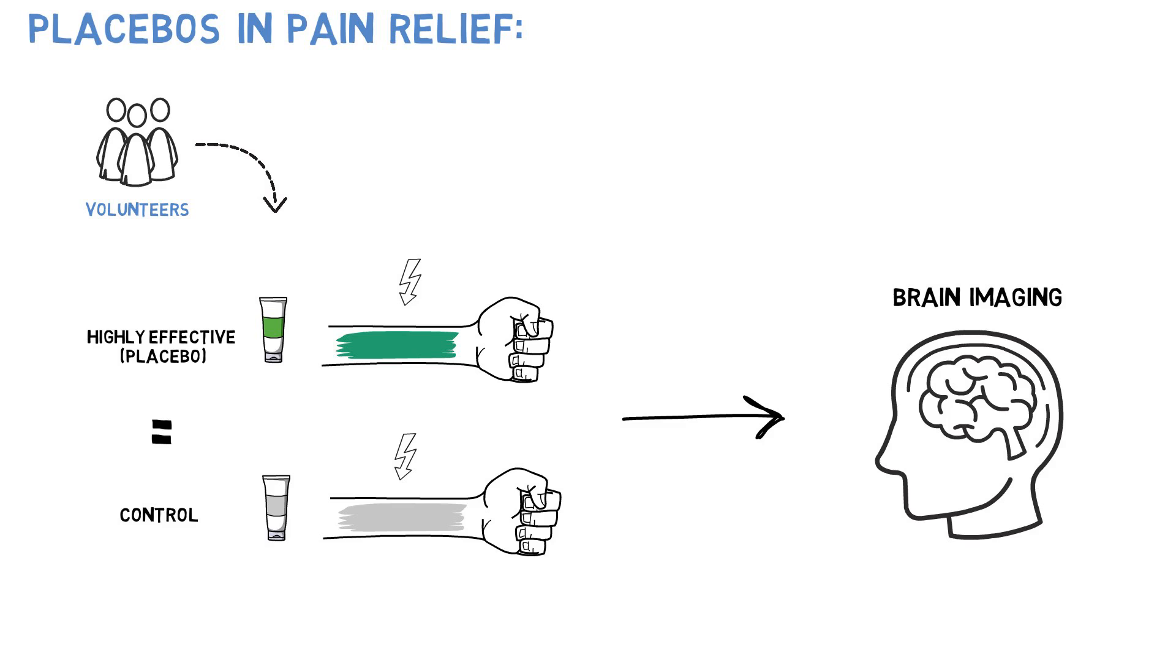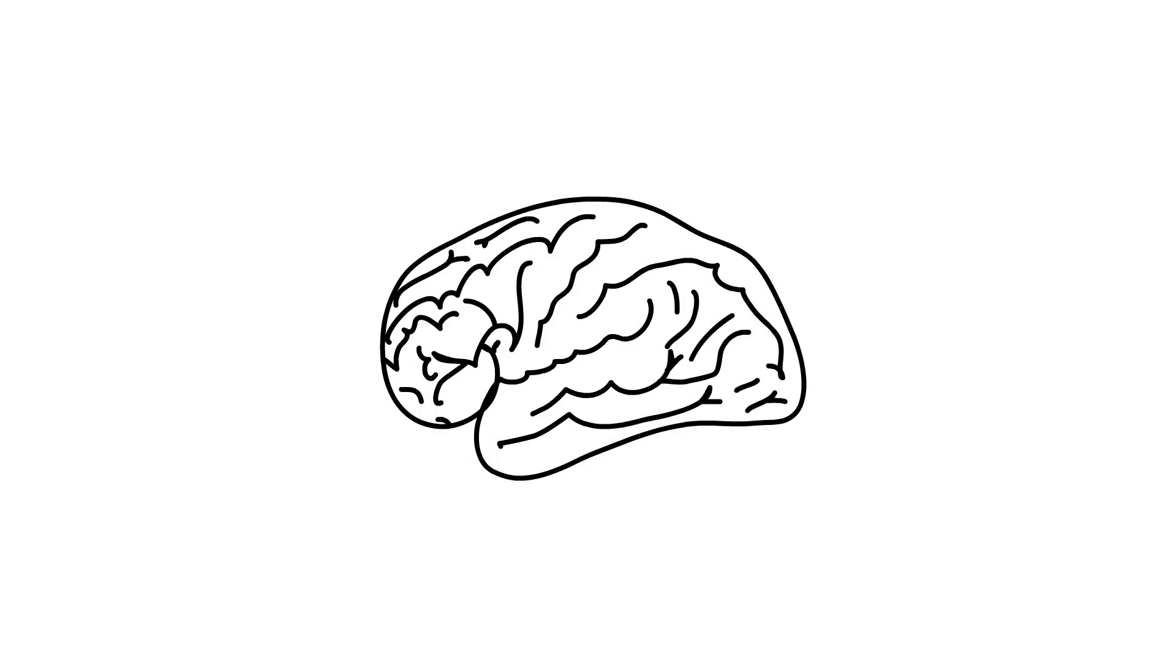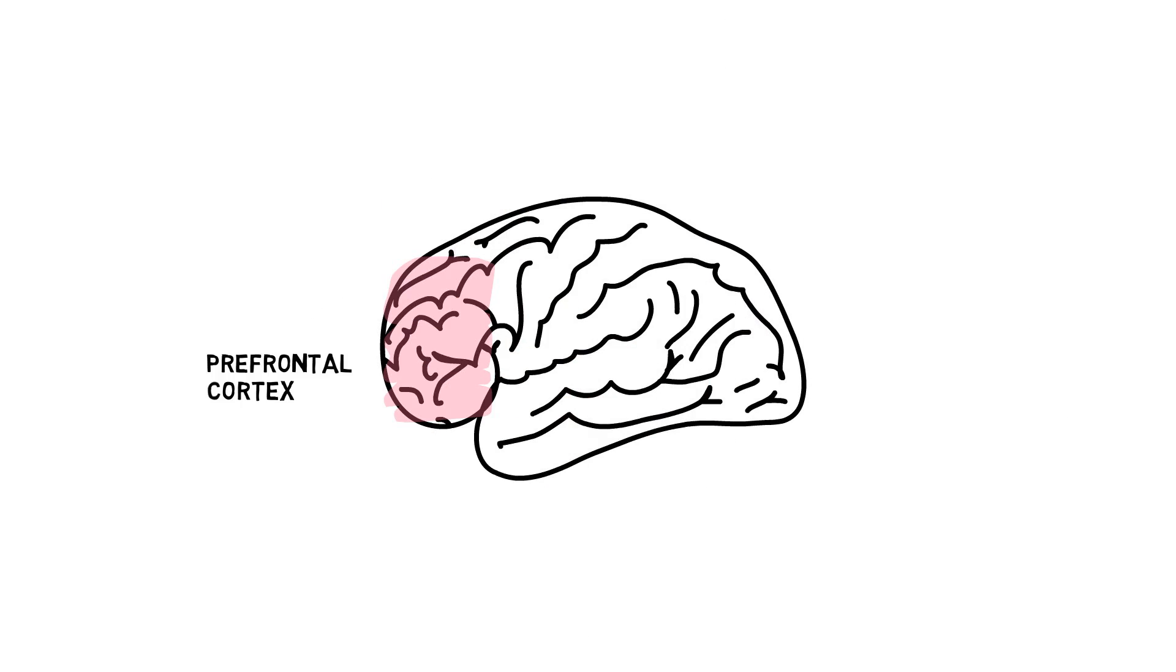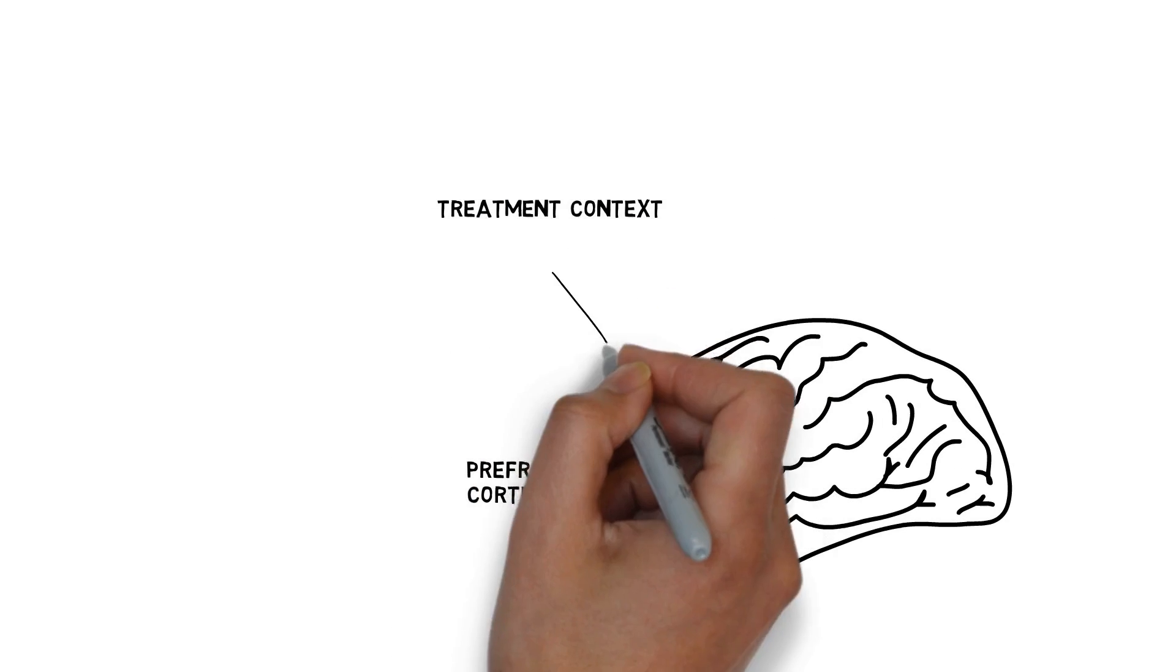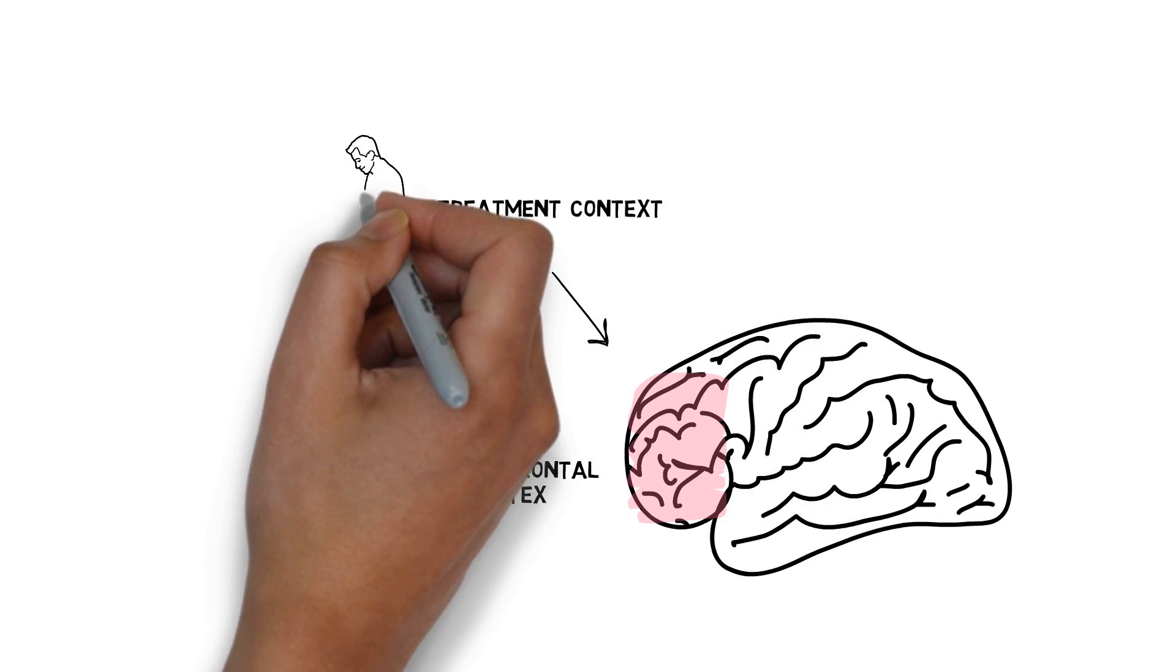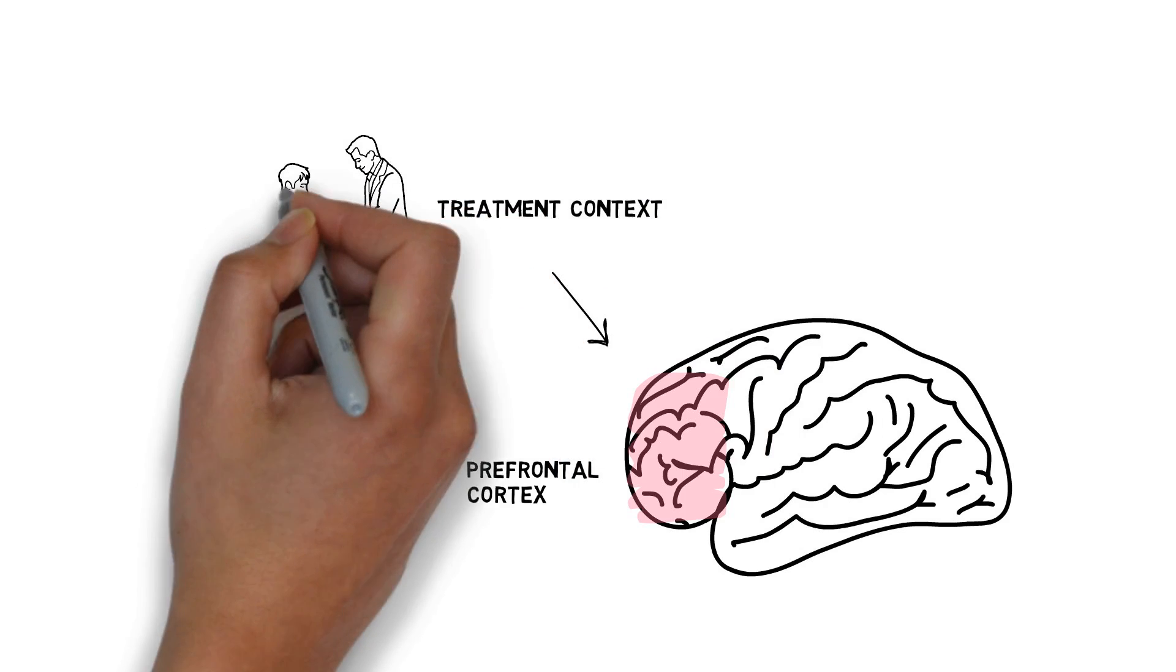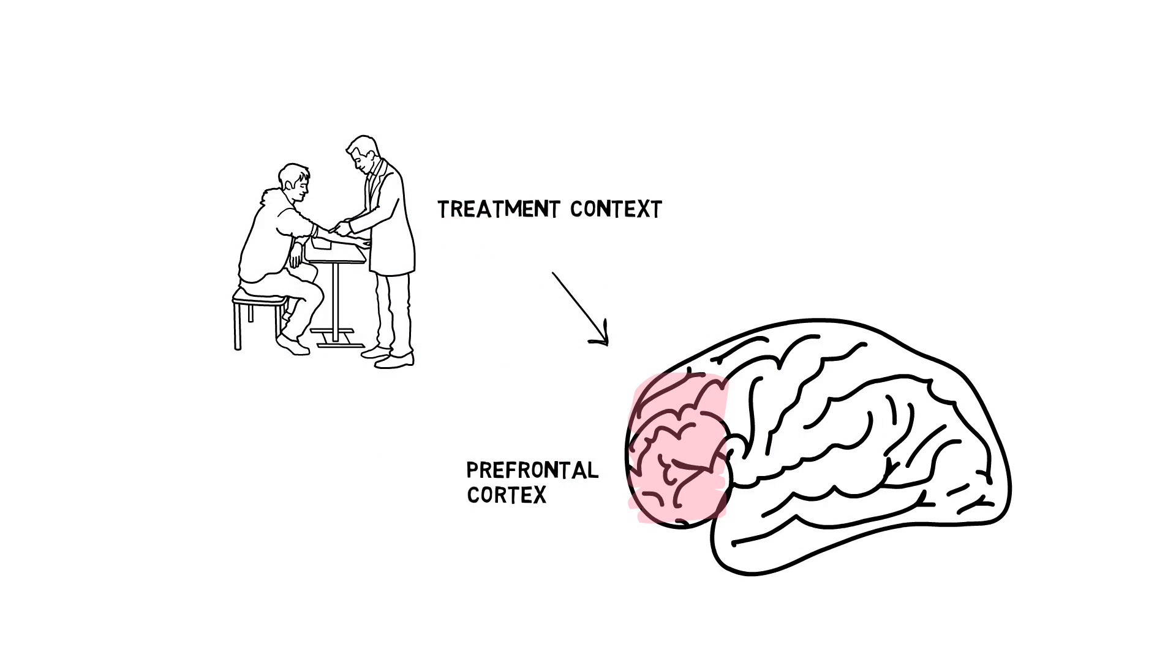It turns out that some brain regions light up more when a patient receives a placebo treatment for pain. One of these is the prefrontal cortex, an area of the brain responsible for high-level thinking that can integrate context clues surrounding a placebo, like a confident doctor wearing a white coat, or the feeling of physical administration of a drug.